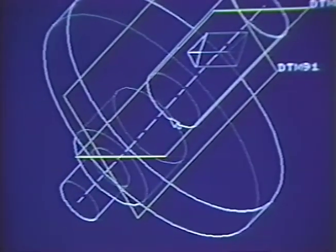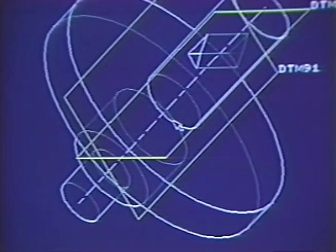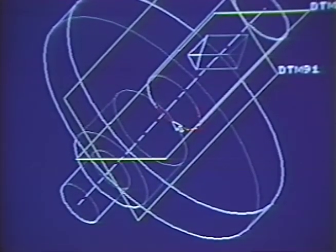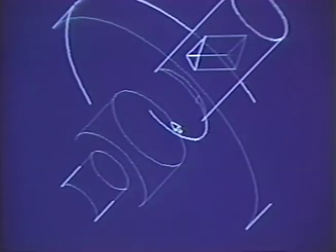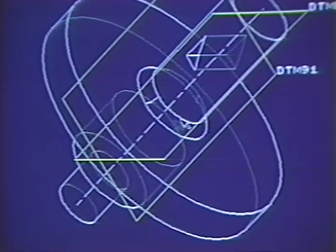Let's create a fillet. Simply select the feature, the radius, and the surface. ProEngineer does the rest.